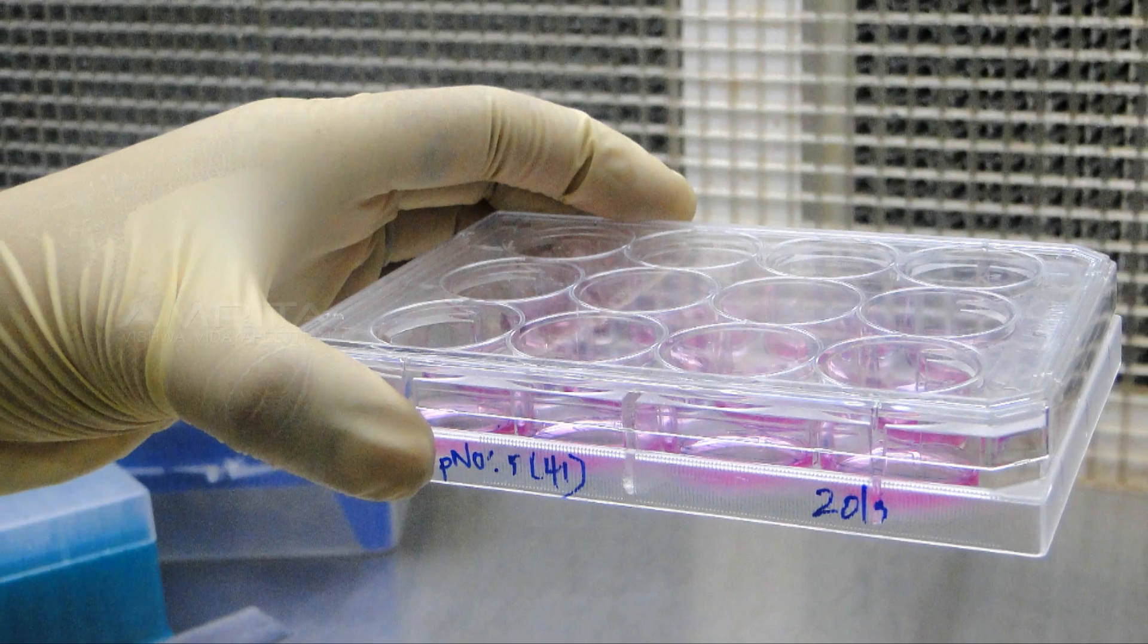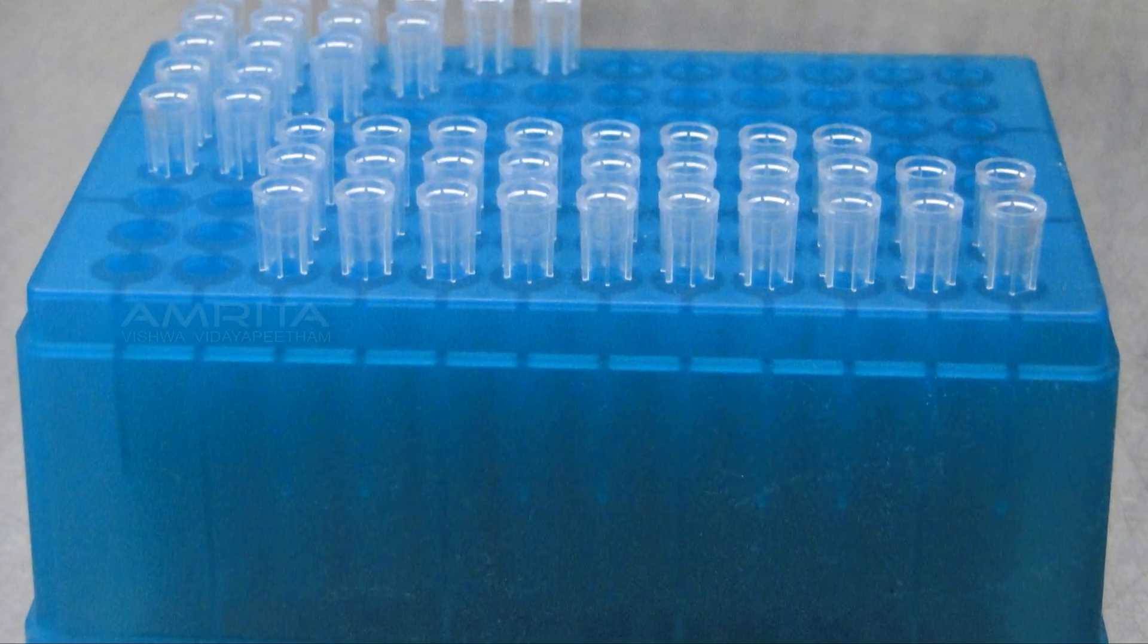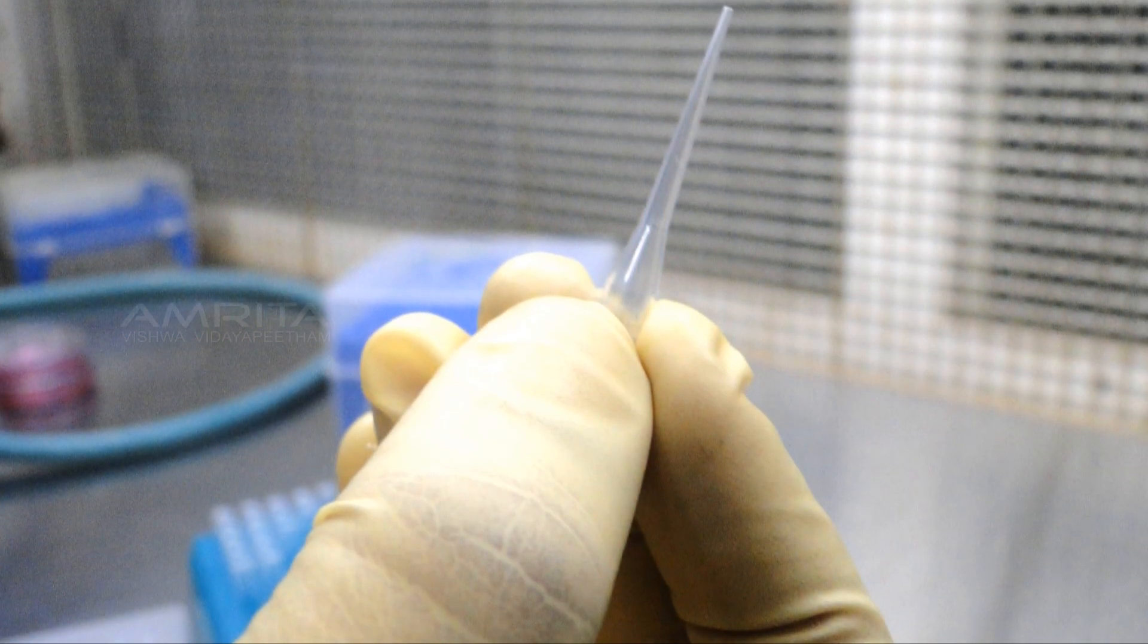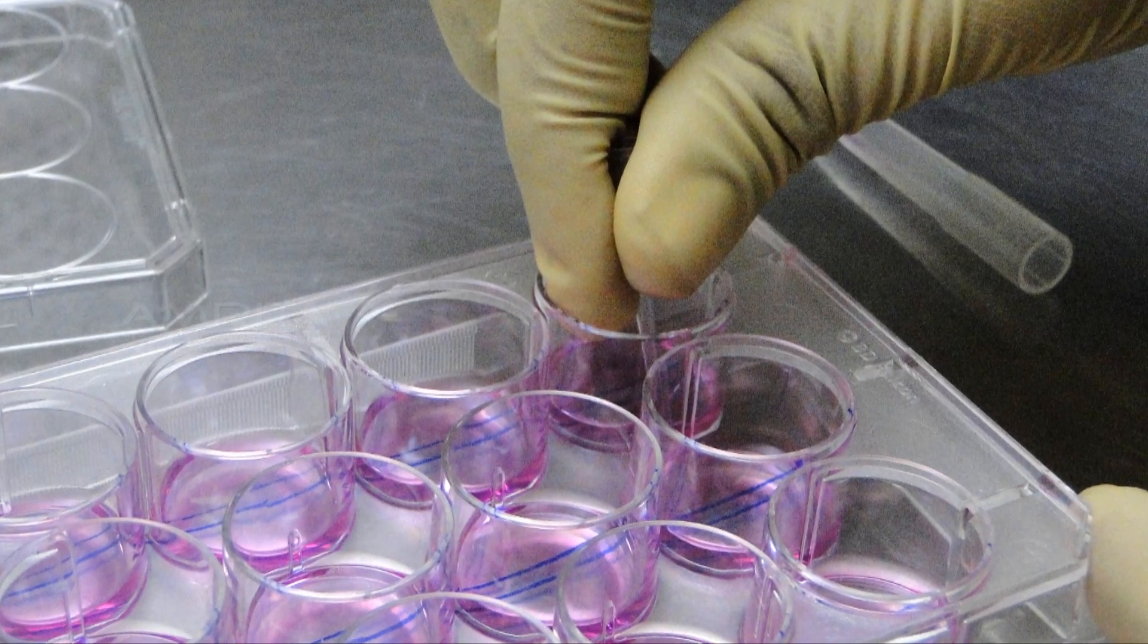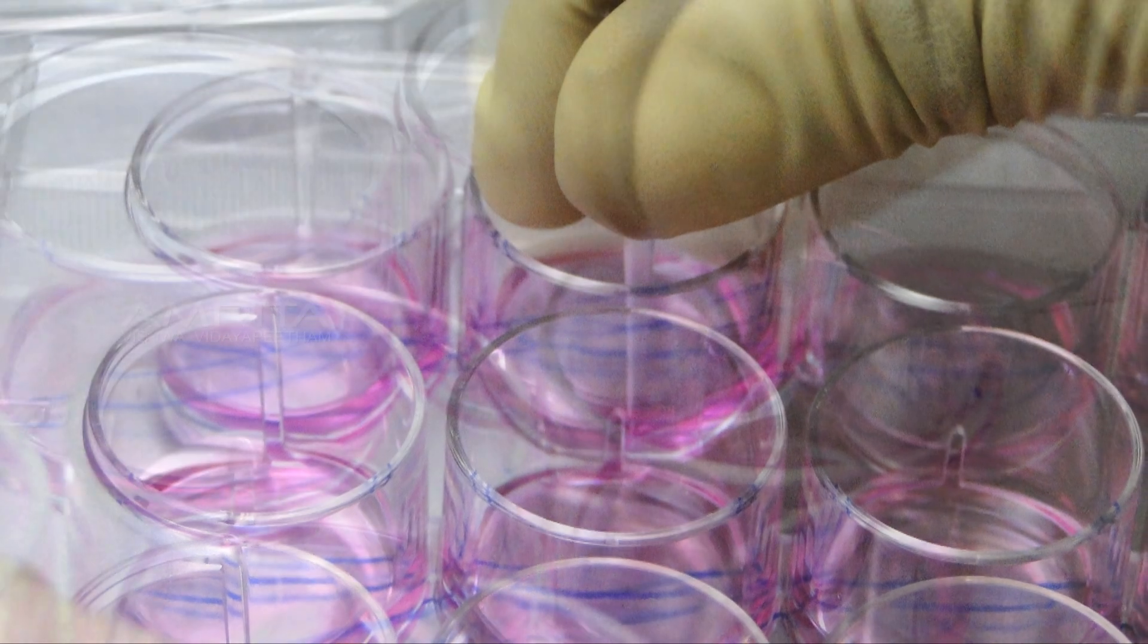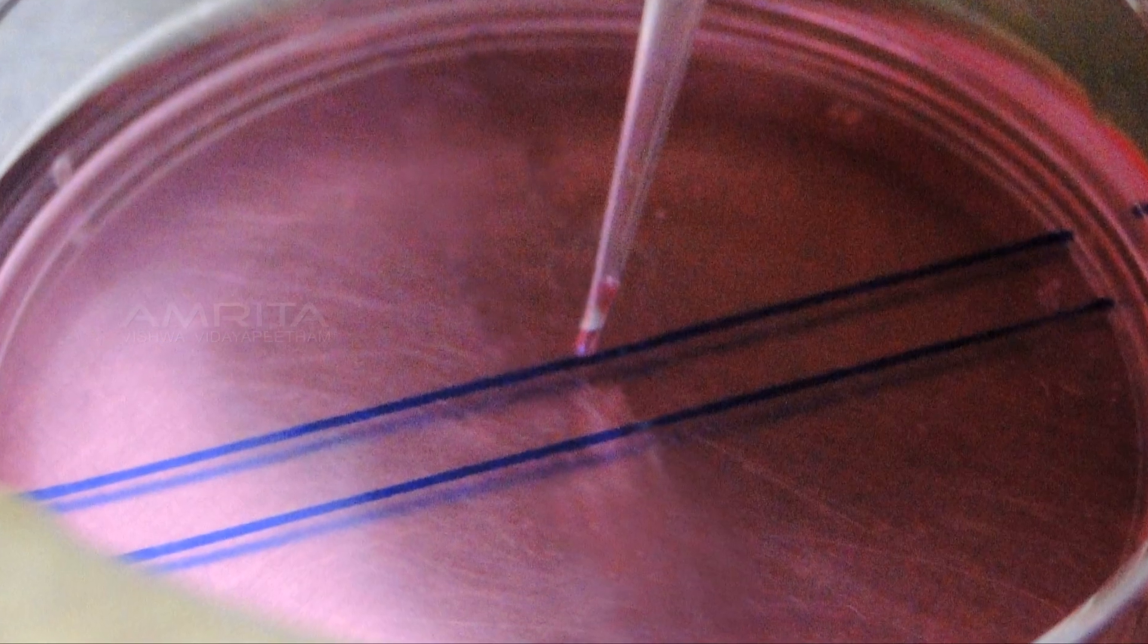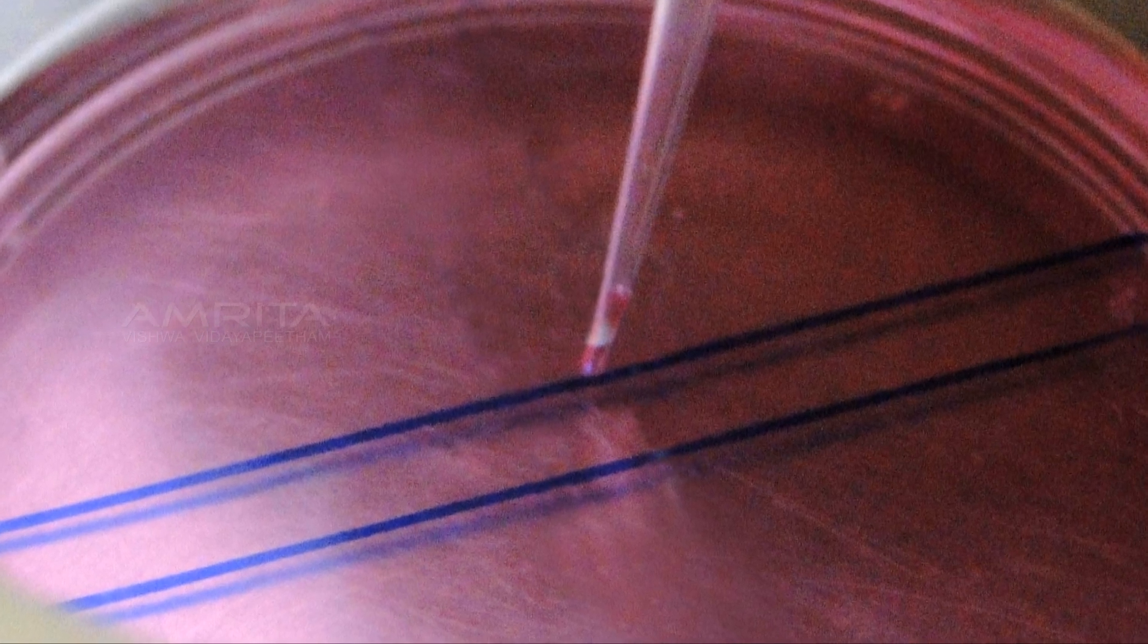Take the plate from the carbon dioxide incubator. Now take 200 microlitre micro pipette tip from the tip box. Make a scratch in each well by holding the micro pipette tip at the base of each well, slightly touching the base of the well and by dragging the pipette tip along the entire length of the well such that the scratch is perpendicular to horizontal line of the mark.